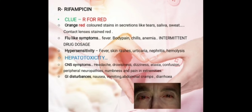Nephritis and hemolysis are also possible with Rifampicin. CNS symptoms can occur like headache, dizziness, and drowsiness. Just remember fever — automatically you connect it to the symptoms which come with a normal fever. Then GI disturbances, nausea and vomiting — which is a very common adverse effect in almost all pharmacology drugs — along with abdominal cramps and diarrhea. Just remember the man's eye in the picture — reddish discoloration.